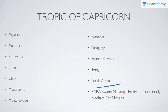The mnemonic for Tropic of Capricorn is: 'Baba Swami Maharaj Prefer To Consciously Meditate For Nirvana.' Baba = Botswana, Argentina, Brazil, Australia; Swami = South Africa; Maharaj = Madagascar; Prefer = Paraguay; To = Tonga; Consciously = Chile; Meditate = Mozambique; For = French Polynesia; Nirvana = Namibia.